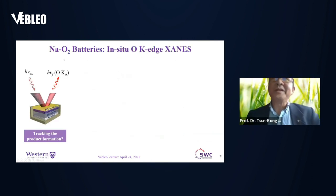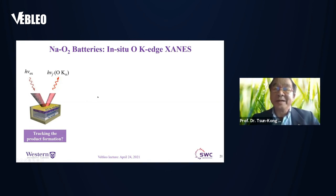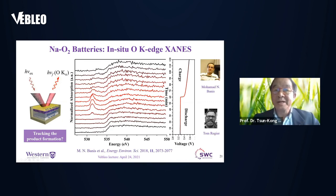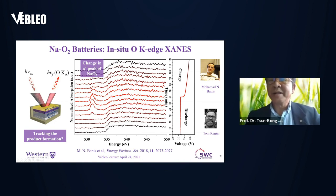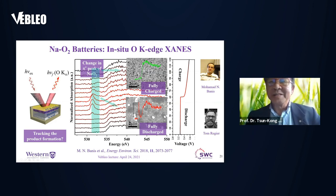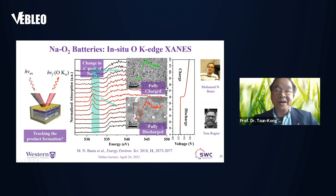We can also do sodium-air batteries. Here's a study where we track how sodium oxide or sodium peroxide changes in a sodium-air battery by doing oxygen K-edge absorption. We can see during the charge-discharge process the appearance and disappearance of a π* resonance, which is present only when you have an unsaturated oxygen-oxygen bond or dioxygen molecular species. When fully charged, you don't see this resonance; when fully discharged, you clearly see the dioxygen molecular species.